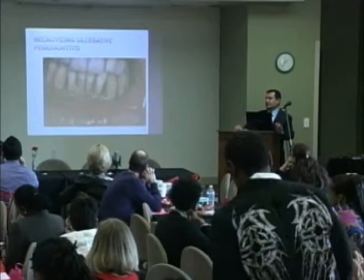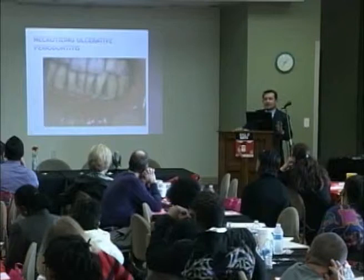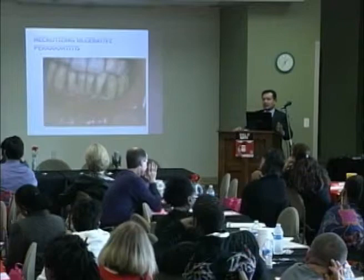Necrotizing ulcerative periodontitis is an inflammation of the periodontum — the bone, ligament, and gums that support the teeth. This is present in people who do have plaque, but it spreads very fast. There's a lot of buildup accumulation and the gums just recede. Another bacterial lesion is bacillary angiomatosis, caused by bacteria we normally have in the mouth, but which develops into lesions in the AIDS stage. A confirmed diagnosis of this, according to CDC guidelines, places the person in the AIDS stage of HIV infection.